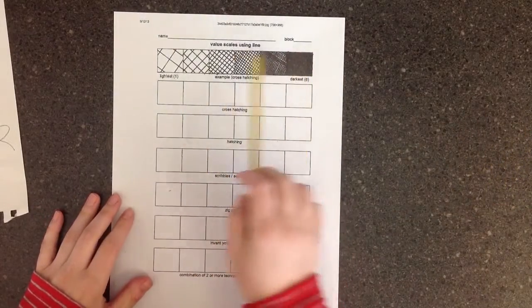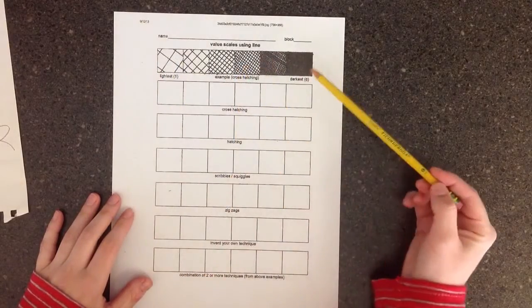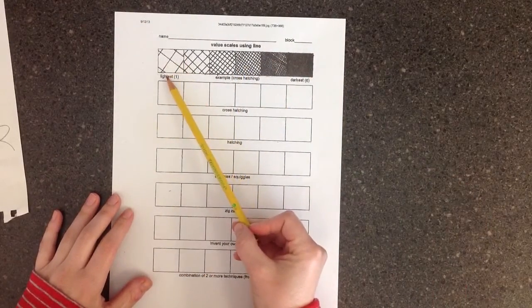It has an example up at the top of a value scale only using line, and it goes from lightest to darkest.